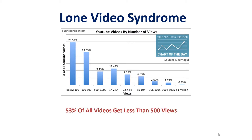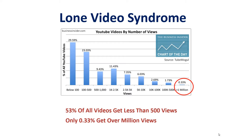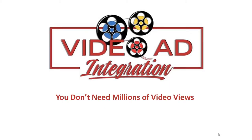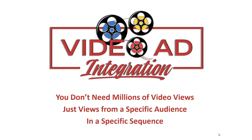The reality is that 53% of all videos get less than 500 views — and most get far less than that. If you're trying to sell your products, getting 500 views will do nothing for you. Only 0.33% of videos get over a million views — a tiny minority become truly viral. But the good news is you don't need millions of video views. You just need views from a specific audience in a specific sequence. That's the magic — that's the trick of video ad integration.